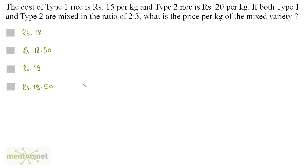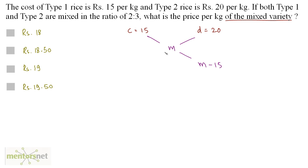The cost of type 1 rice is Rs.15 per kg and type 2 rice is Rs.20 per kg. If both type 1 and type 2 are mixed in the ratio of 2 is to 3, what is the price per kg of the mixed variety? The cheaper type is type 1 at Rs.15, so C equals 15, and the costlier is Rs.20, so D equals 20. Let the mixed variety's price be M. On the right hand side we have M - 15, and on the left hand side we have 20 - M.